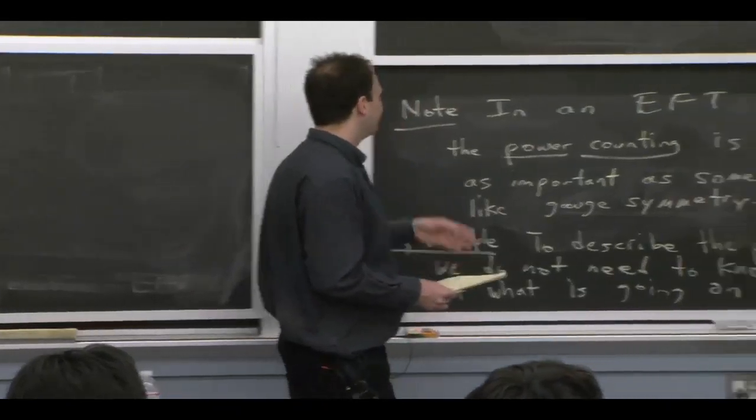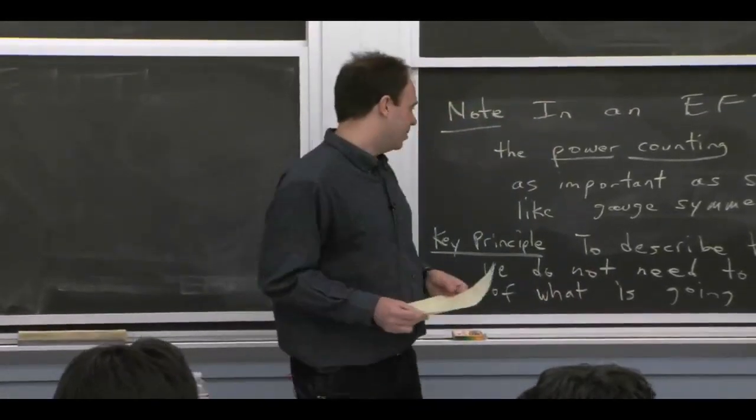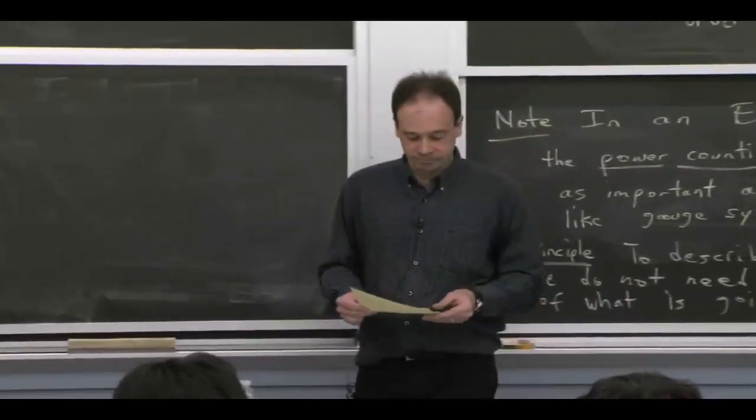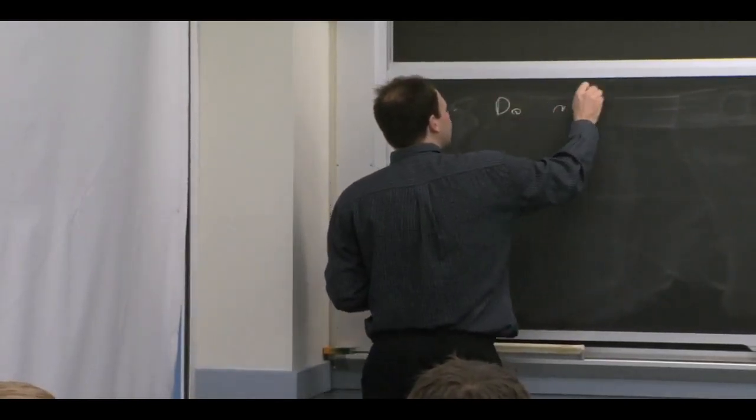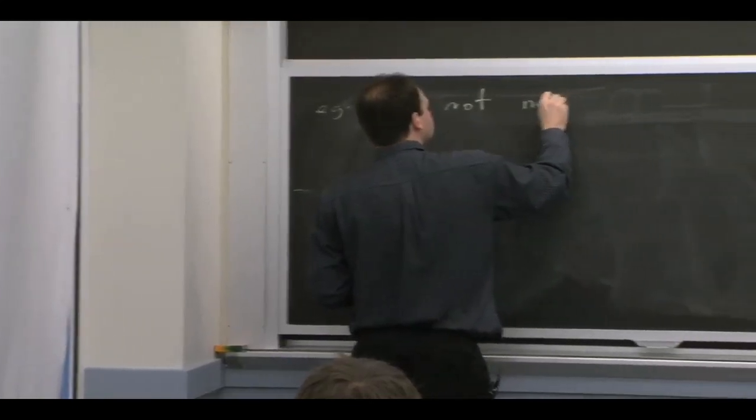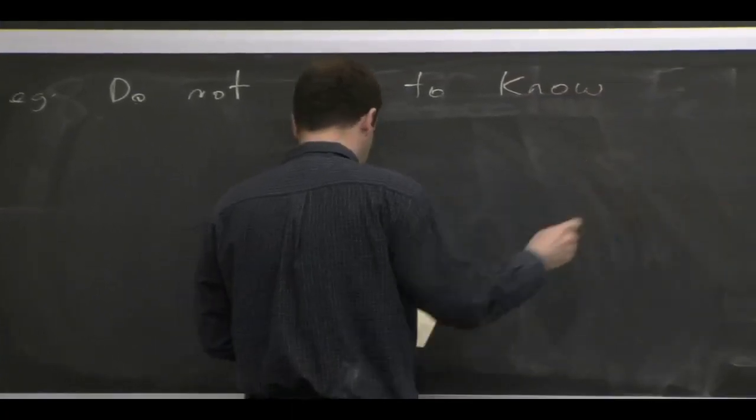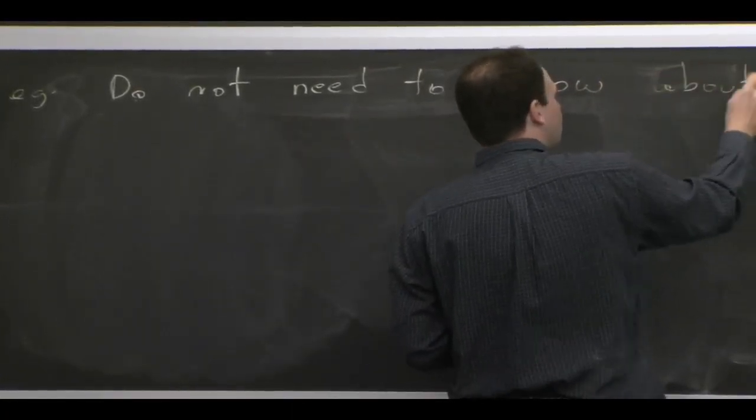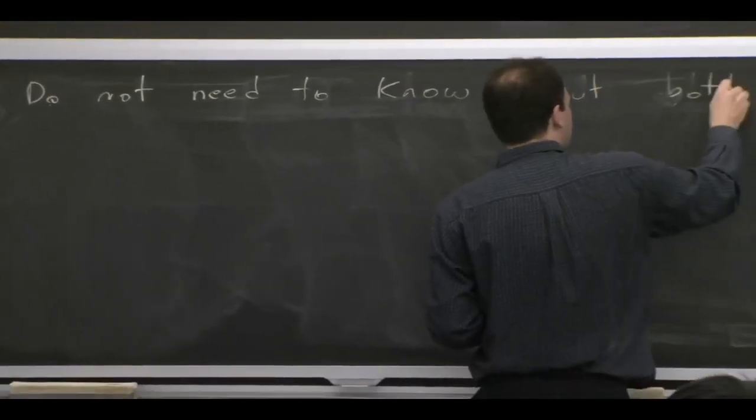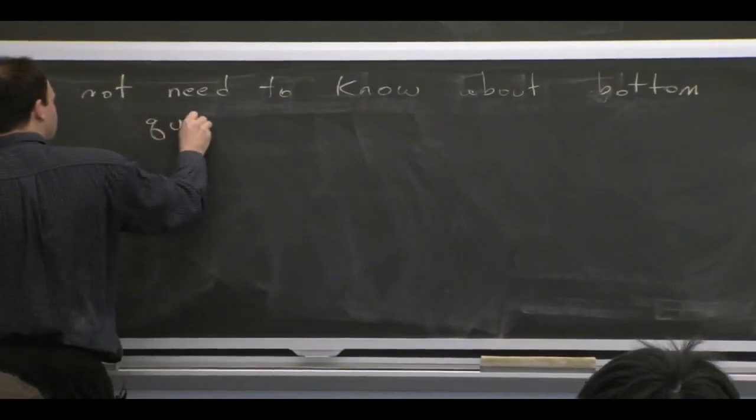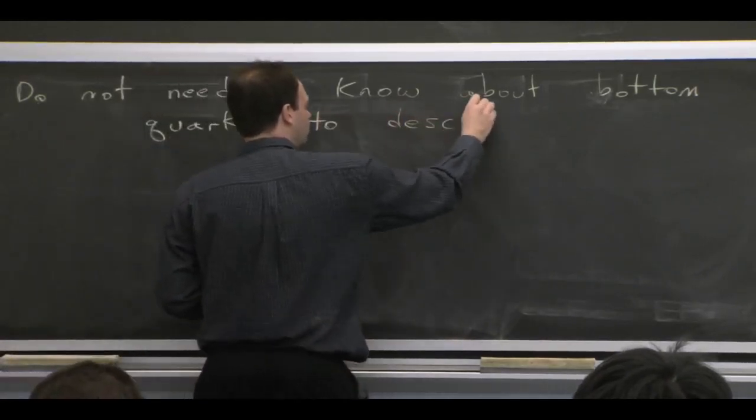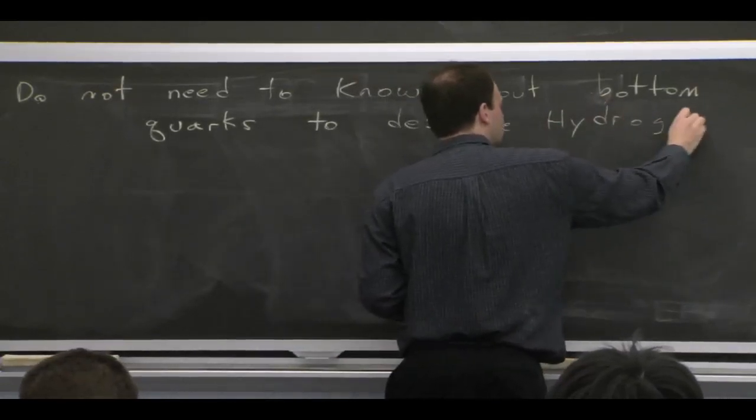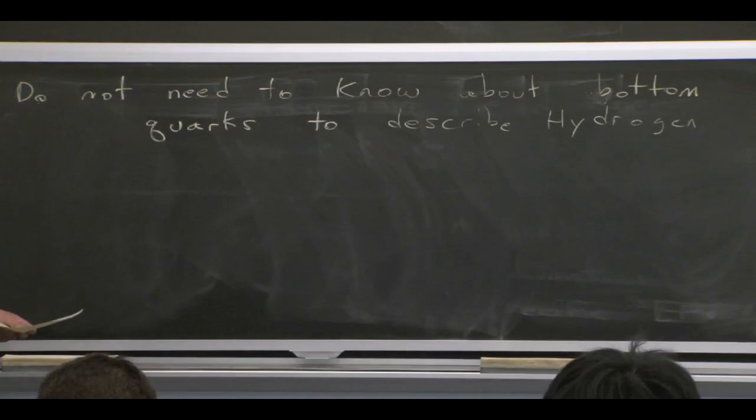Even something as simple as going to higher order corrections in hydrogen involves thinking beyond this simple statement here. Since we're on the topic of hydrogen, let me go into a little more detail there. To flesh this out a bit and to talk about some of the things you have to be careful about, I'll phrase an example as the fact that we don't need to know about bottom quarks to describe hydrogen. That's good. When you took quantum mechanics as an undergraduate, you didn't have bottom quarks in your description.